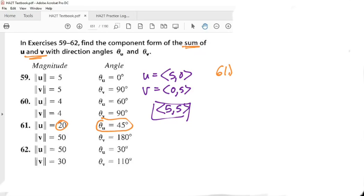What are the coordinates of the point on the unit circle? That is 45, yes, √2/2, √2/2. So we're going to take 20 and we're going to multiply it to √2/2, √2/2.